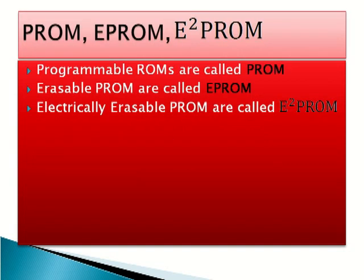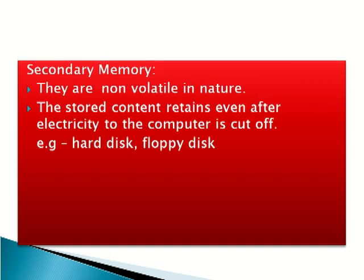Types of ROM: programmable ROM are called PROM, erasable PROM are called EPROM, and electrically erasable PROM are called E-squared PROM. Secondary memory is non-volatile in nature, meaning the content is retained even after electricity to the computer is switched off.